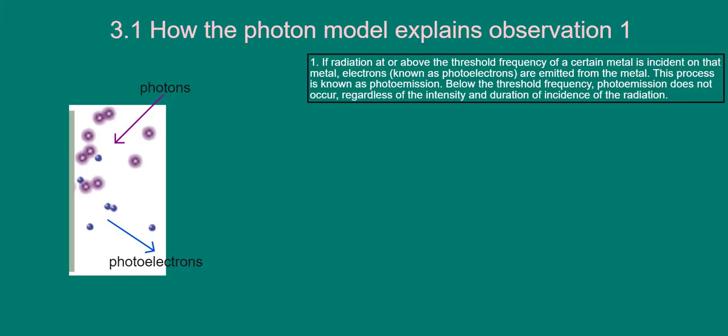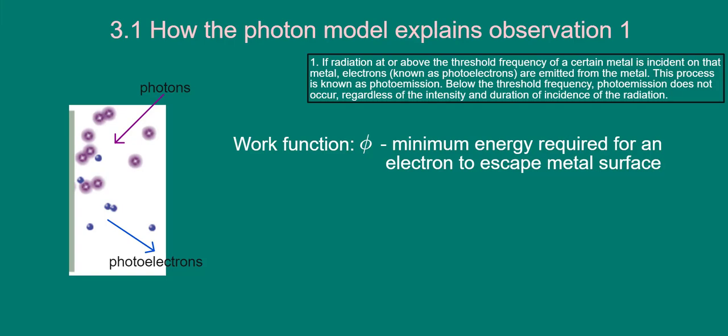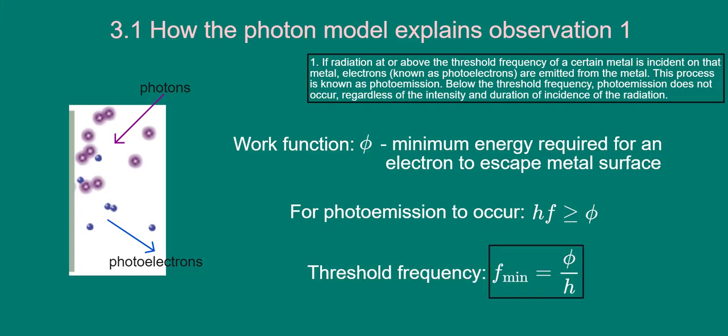Why does each metal require a specific threshold frequency, a minimum frequency, in order for photo emission to occur? There is a minimum energy that electrons must gain if they are to escape a metal surface. This minimum energy is known as the work function and varies from metal to metal. As shown, we use the Greek letter phi to denote the work function. An electron can gain this minimum energy by absorbing a single photon. Thus, a single photon's energy, hf, must be at least equal to the work function for emission to occur. If we replace the inequality with equality, we can get an expression for the threshold frequency, as shown. The subscript min is short for minimum.